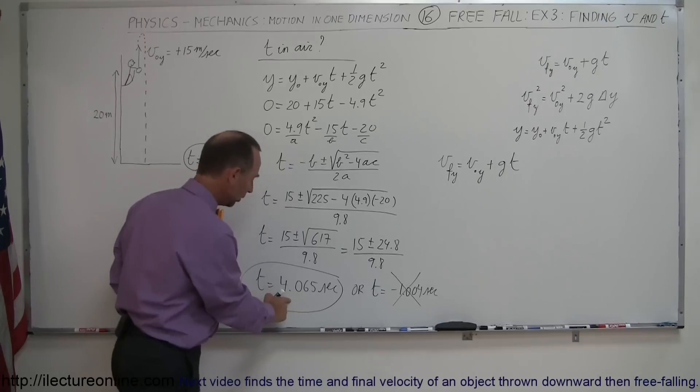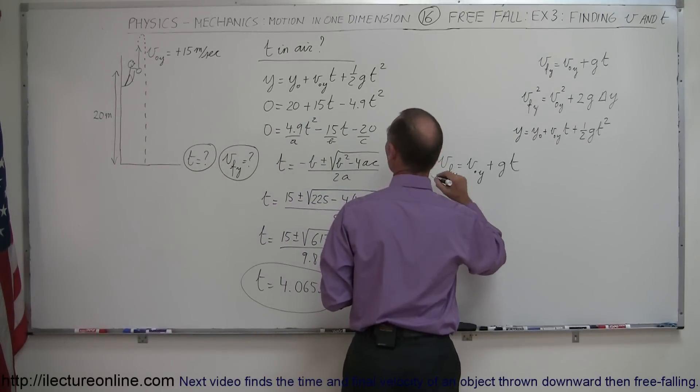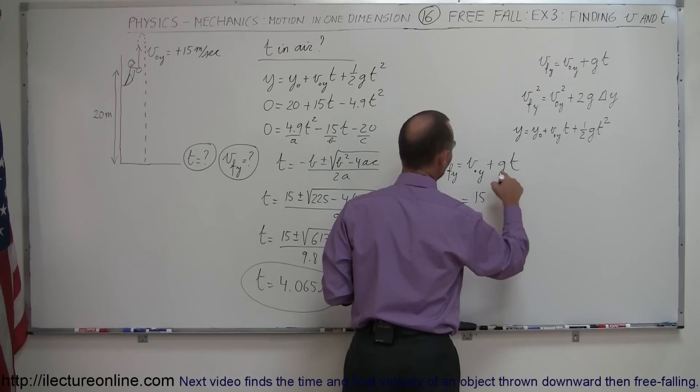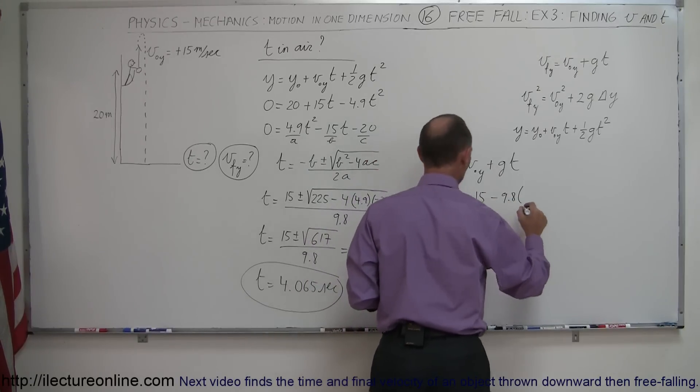T is now known, 4.065 seconds. So the initial velocity is 15 meters per second, and of course G is a minus 9.8 times T being 4.065.